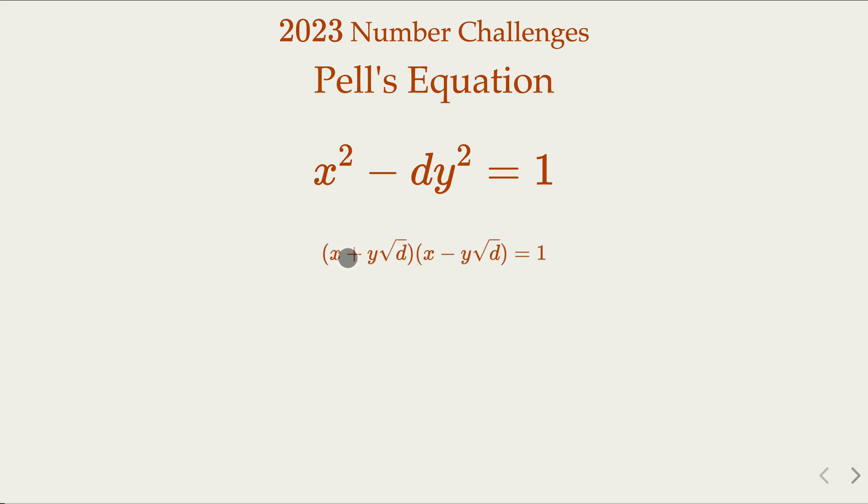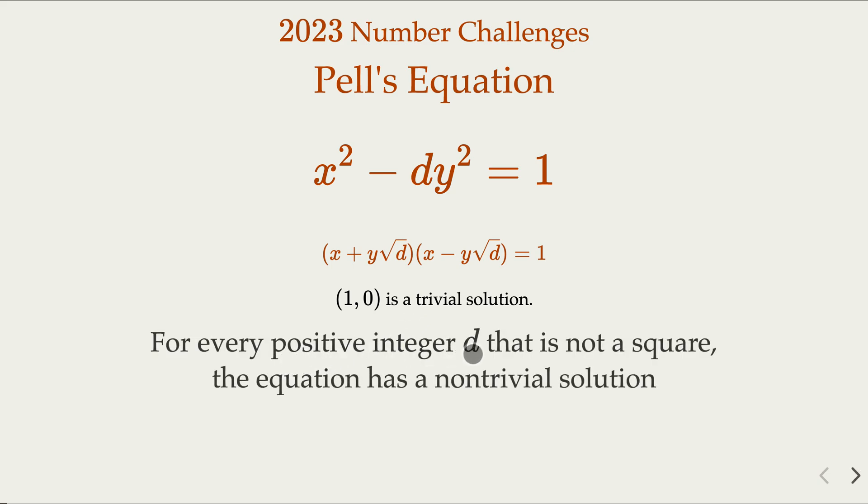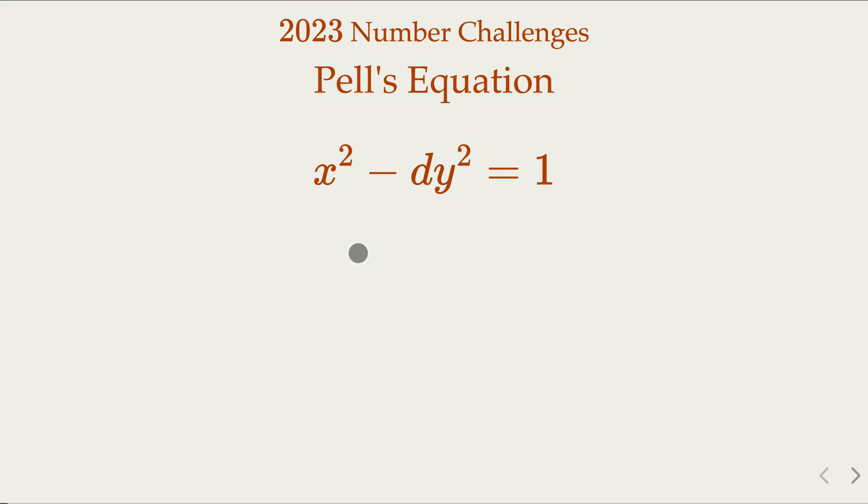Back in the days people figured out this equation would have a solution. When x equals 1, y equals 0, that satisfies the equation, so we always have 1, 0 as the trivial solution. Of course, we're interested in non-trivial ones. As d is not a square, then the equation has a non-trivial solution. For the solution that is smallest in terms of the magnitude of x_0, y_0, we call it fundamental solution.